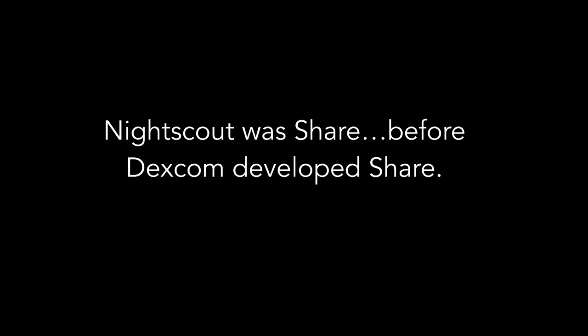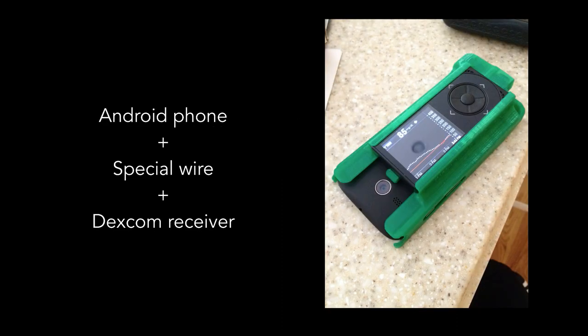As a very brief background, Nightscout first started in about February 2013 as a way of remotely viewing Dexcom data, even before Dexcom developed its share system. A group of motivated parents of kids with Type 1 and adults with Type 1 worked to develop Nightscout so that they could see their Dexcom data beyond simply the handheld receiver. They programmed the original Nightscout to allow an Android phone cabled together with a Dexcom receiver to serve as a way of uploading Dexcom data into the cloud — up into the internet.